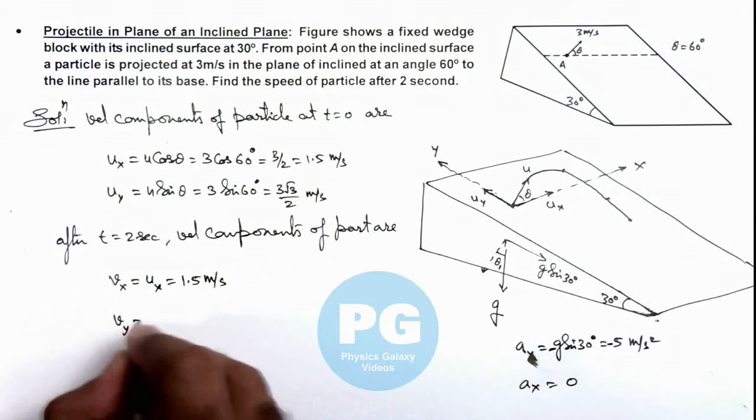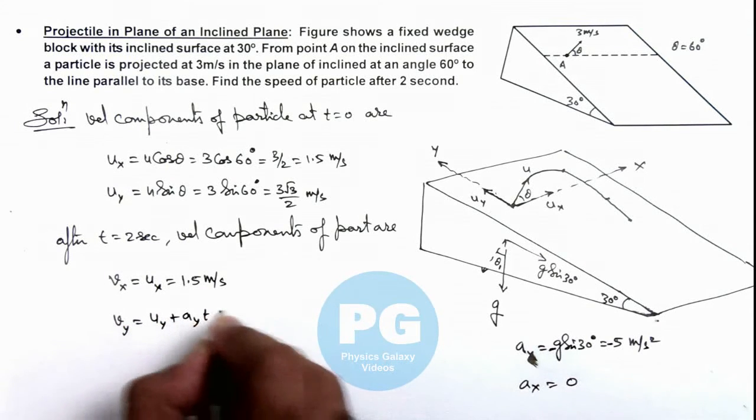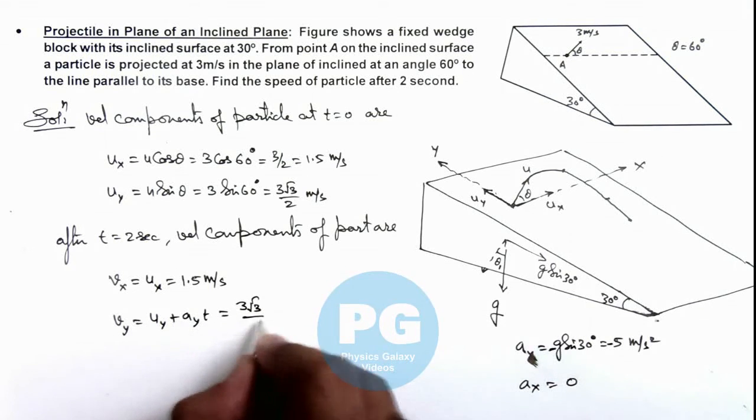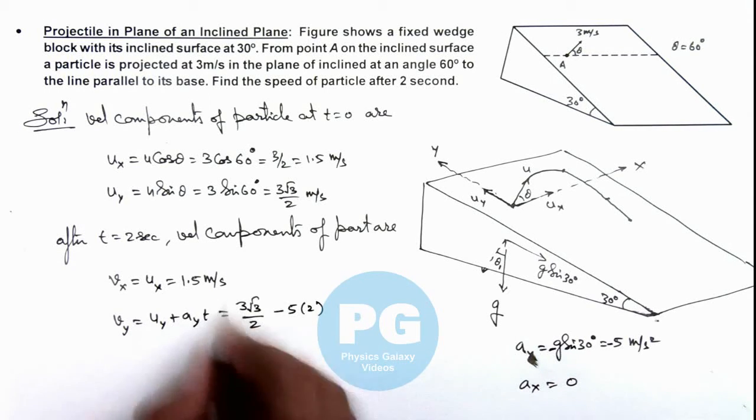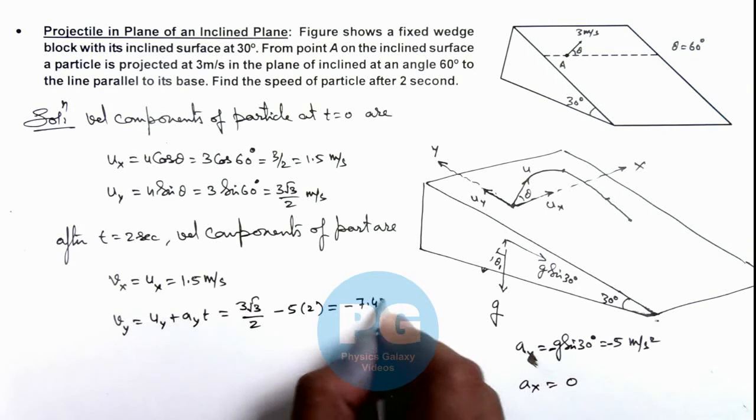And velocity in y direction I can write as uy plus ay times t, which can be taken as uy is 3 root 3 by 2 meters per second and ay is minus 5, and time is 2 seconds. So if you simplify this it'll give you minus 7.42 meters per second.